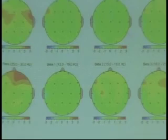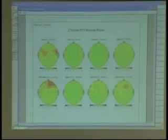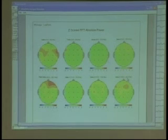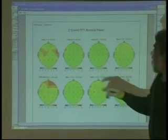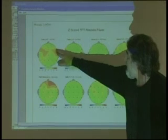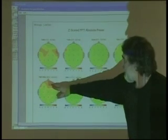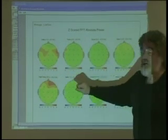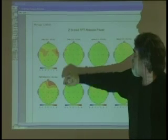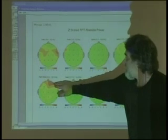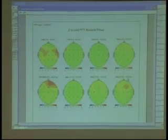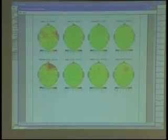There we have the absolute power. And what the report is finding is basically everything is normal. We have a very tiny delta excess over here and a very slight high beta excess over here. So we have a little bit of slowing, just a little bit, and we have a little bit of fast activity over here on the right. And we all know what that can imply. Nothing to really worry about but something that might be addressed. So there's our absolute power z scored.